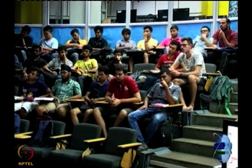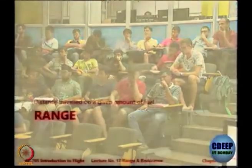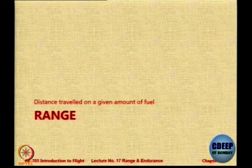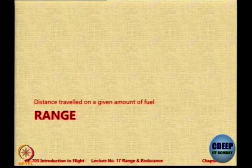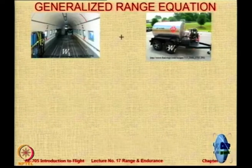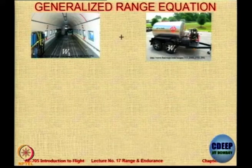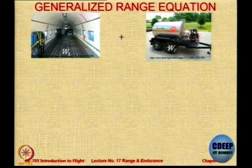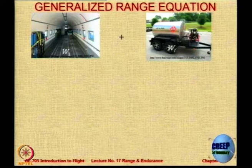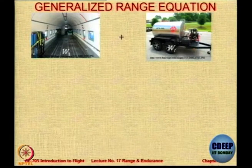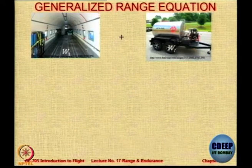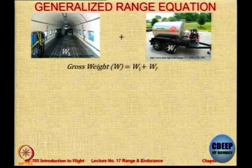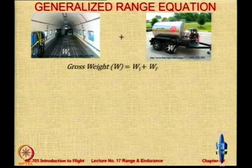Let us now look at some mathematical formulations for arriving at how much range an aircraft can travel. The distance travelled on a given amount of fuel is called the range. We assume it is steady level flight. We divide the aircraft weight into two things: everything other than fuel, W1, and only fuel, Wf. The aircraft gross weight W is equal to W1 plus Wf.